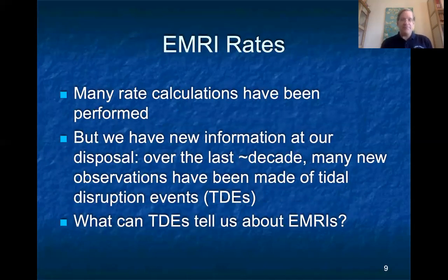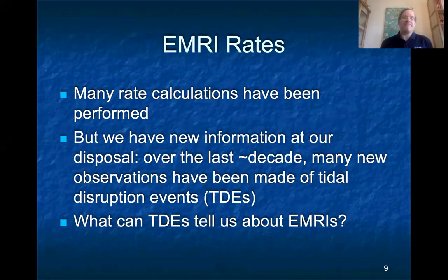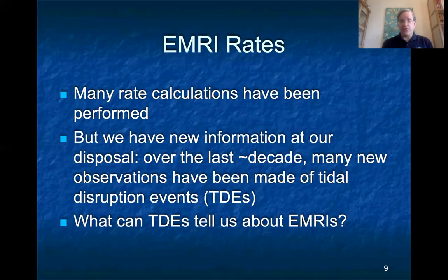We'd like to know the rates of these EMRIs. There have been many rate calculations performed, and these are quite challenging. Part of the reason is that the relevant portion of the galactic nucleus is really tiny compared to our distance from it — it's not possible to get direct measurements of the dynamical characteristics of galactic nuclei farther away than ours and maybe Andromeda and a few others. But over the last decade, tidal disruption events — where stars are ripped apart by the tidal gravity of the supermassive black hole — have become a remarkable new source of information. The question is: what can these events tell us about the likely rates and characteristics of extreme mass ratio inspirals?